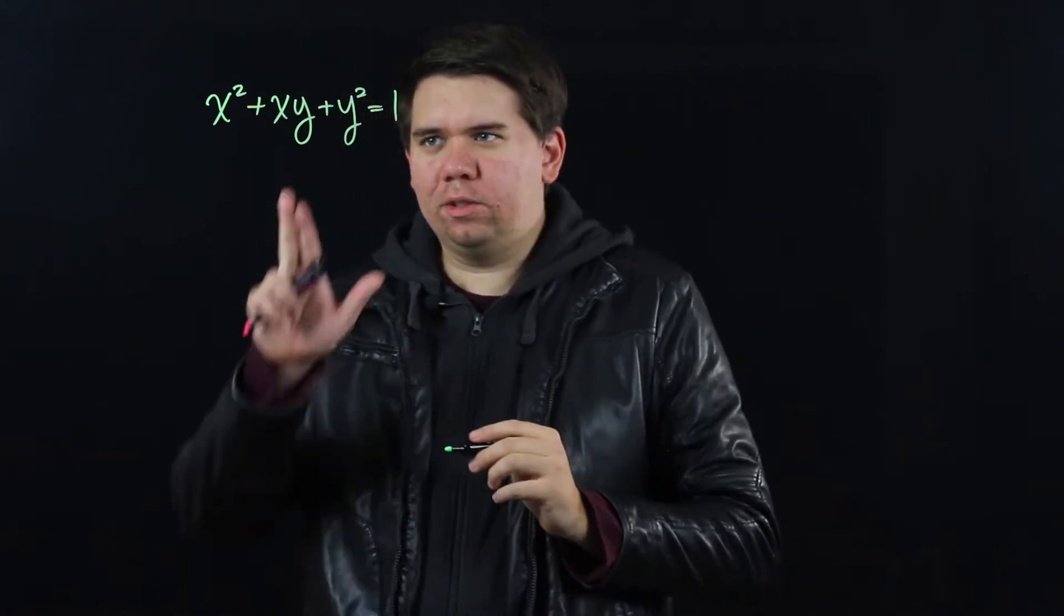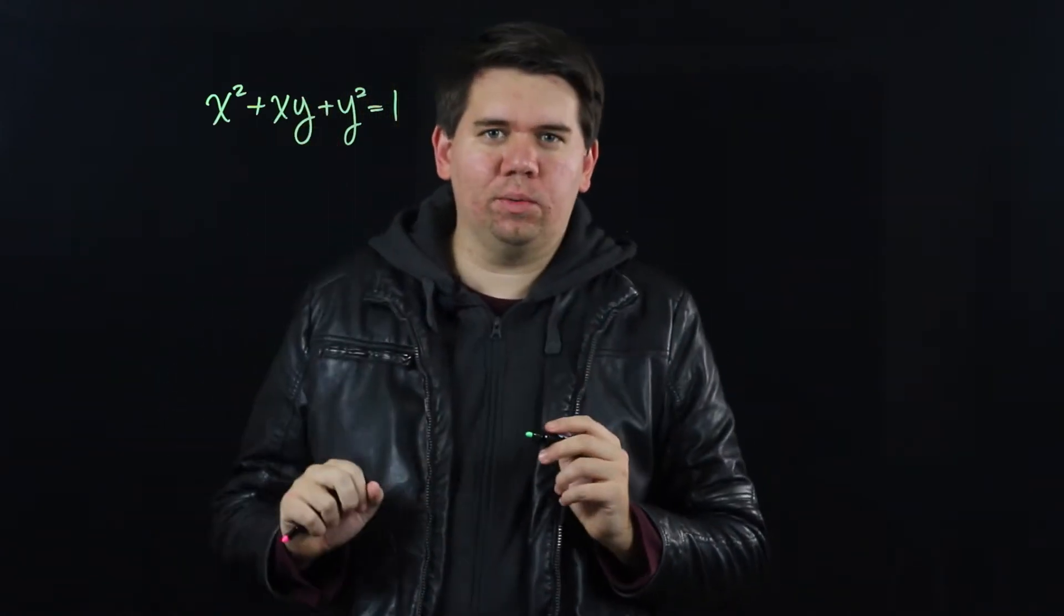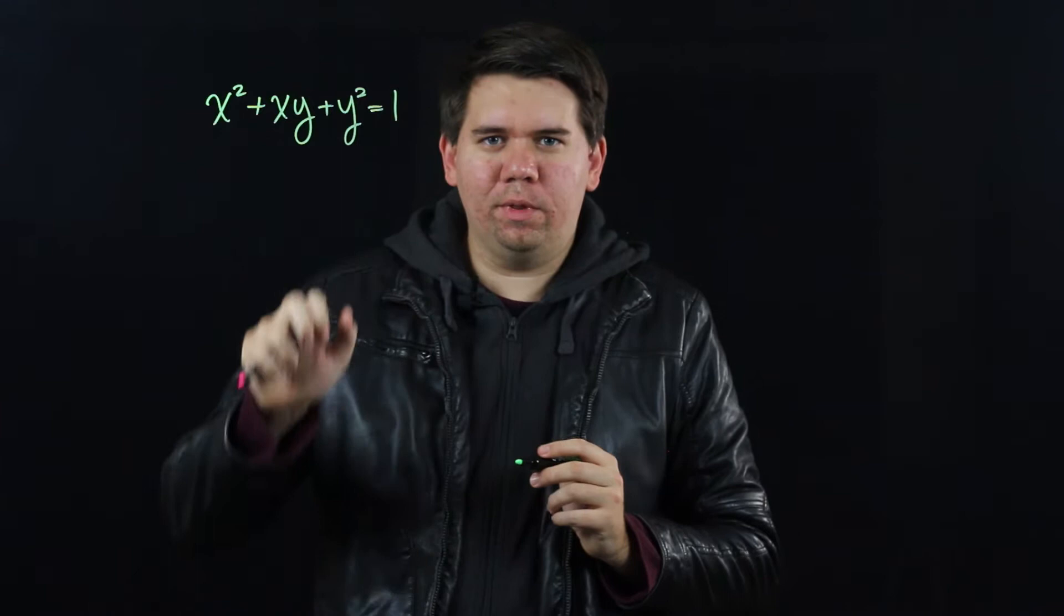Consider the equation x squared plus xy plus y squared equals 1. It almost looks like a circle, x squared plus y squared equals 1, but you have this extra term in the middle.